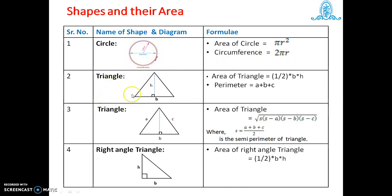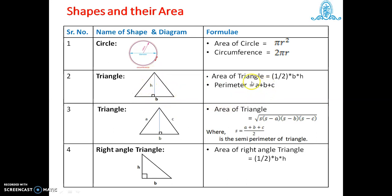Next, triangle. In any triangle, the area of triangle is equal to half base into height. This is the base and this is the height of the triangle. The perimeter is equal to a plus b plus c — that is, the sum of all sides of the closed figure, so we write the addition of all sides as a, b, and c.